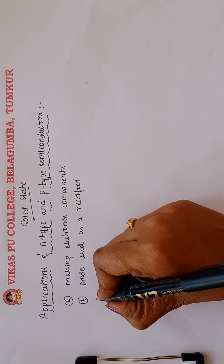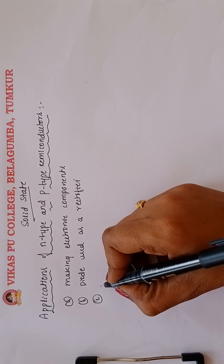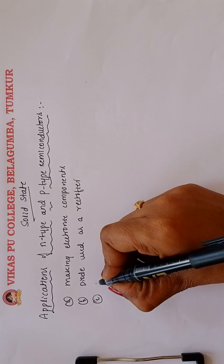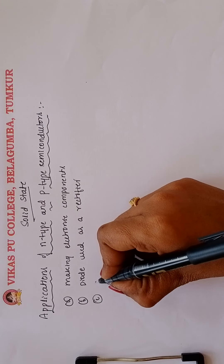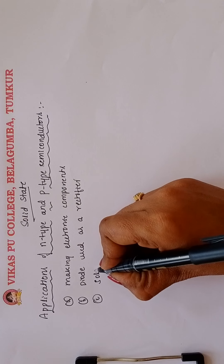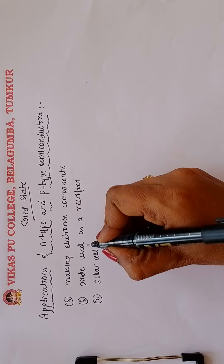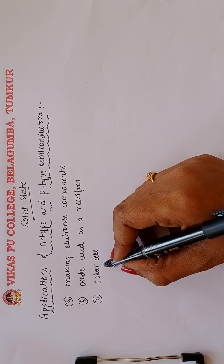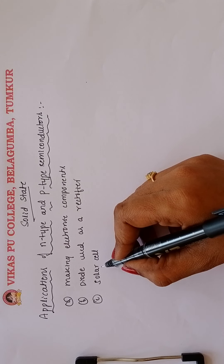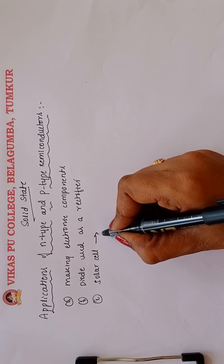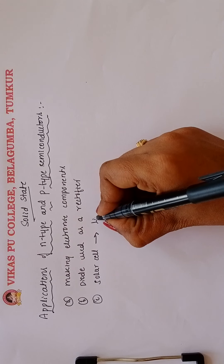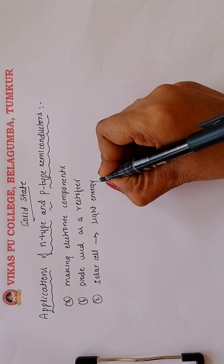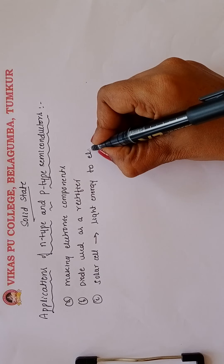Then solar cell — a solar cell is an efficient photodiode used for the conversion of light energy into electrical energy. This is a type of diode, an efficient photodiode, which is a combination of N-type and P-type semiconductors used to convert light energy to electrical energy.